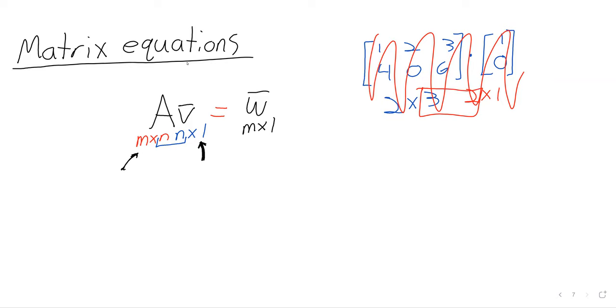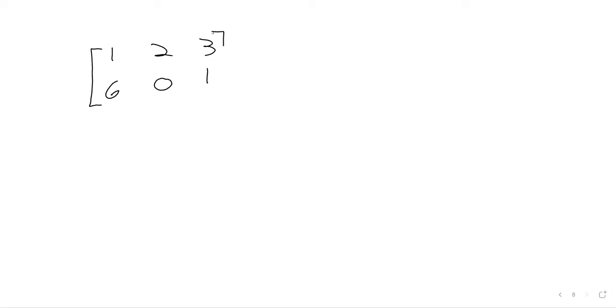How many of you have seen a matrix times a vector before? Okay, so there are two ways this material can be presented, and one of them is a little inscrutable. So let's go with the more intuitive one first, and present it via an example.